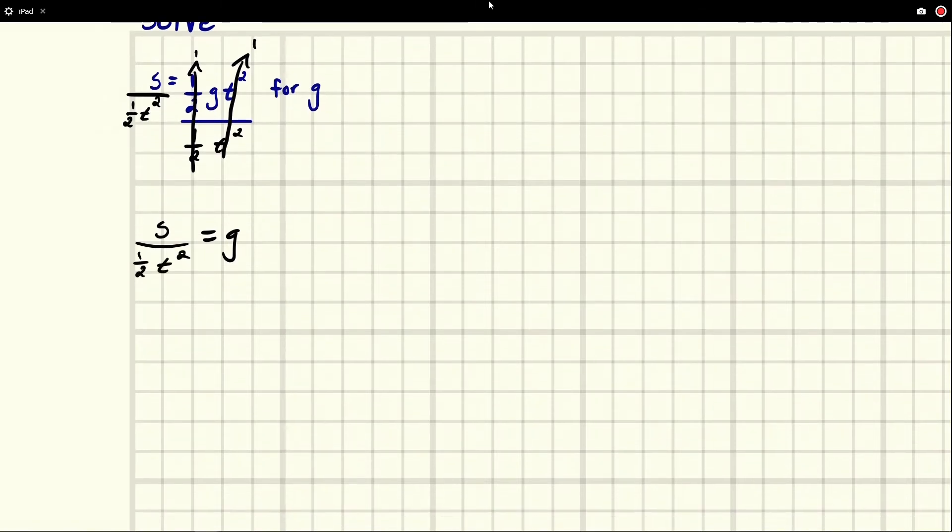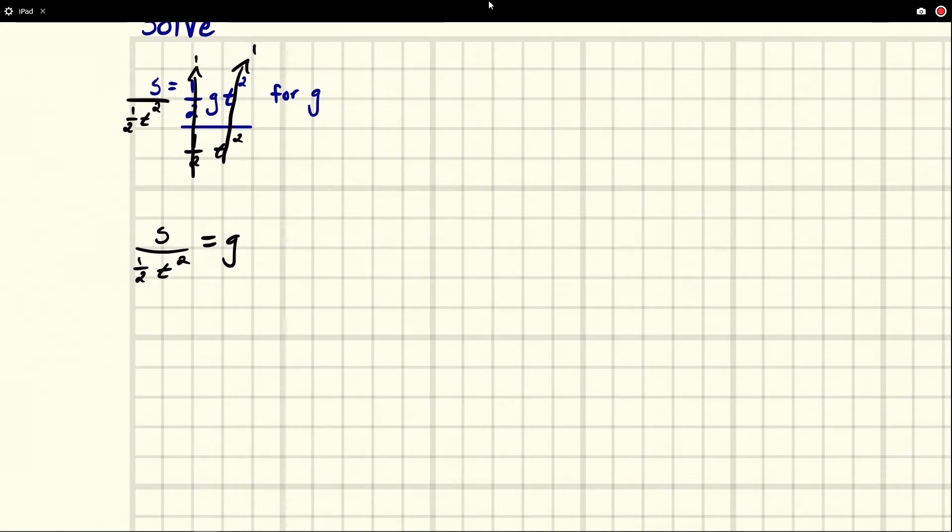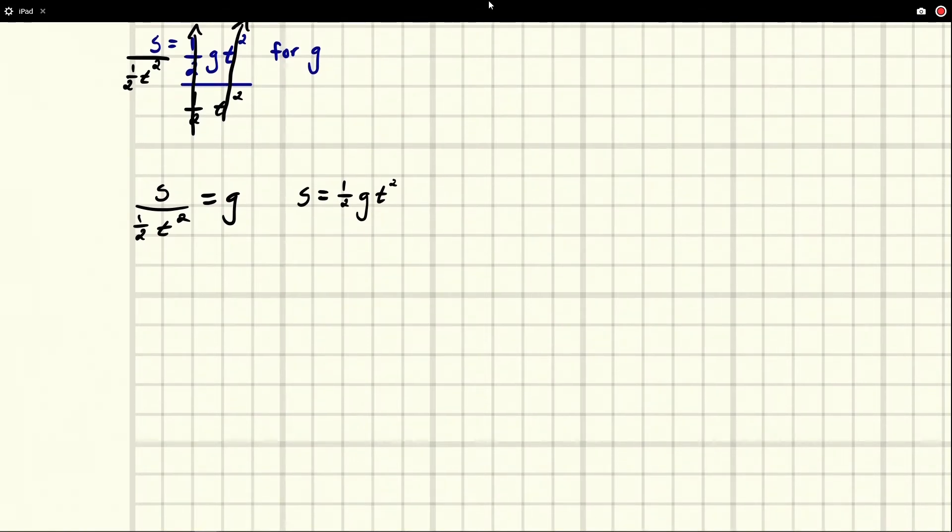Now you can also do this. Let's start right back at the beginning with one half g t squared. Instead of dividing by a half like I did there, you can also multiply both sides by two.